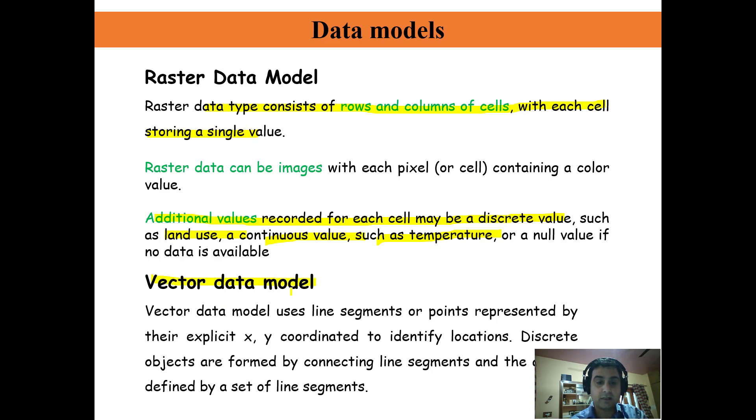Vector data uses line segments or points represented by their explicit X and Y coordinates to identify locations. Discrete objects are formed by connecting line segments, and the area is defined by a set of line segments like point, line, and polygon.